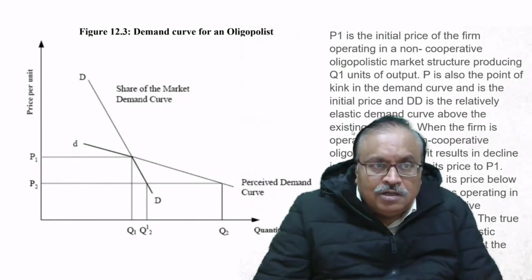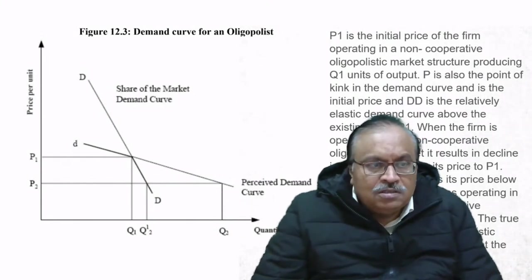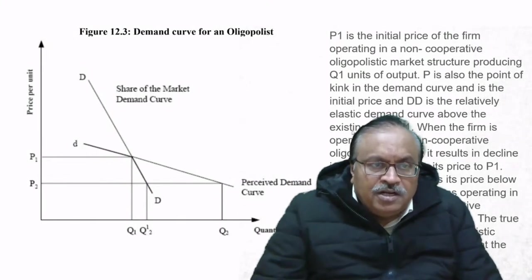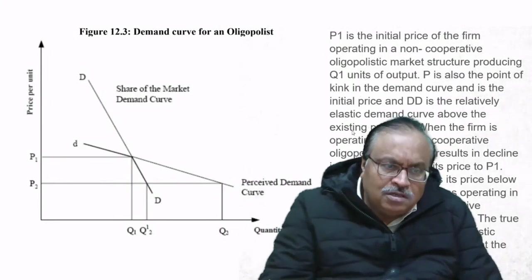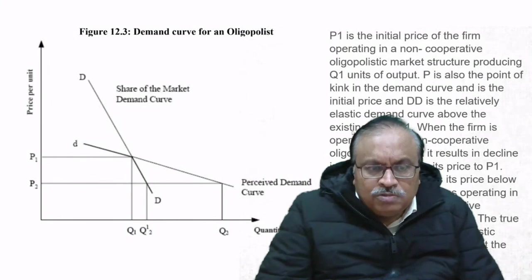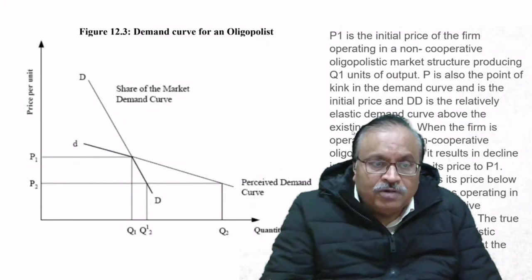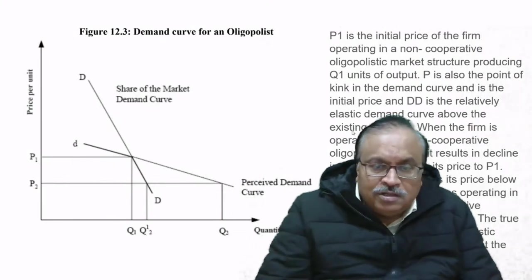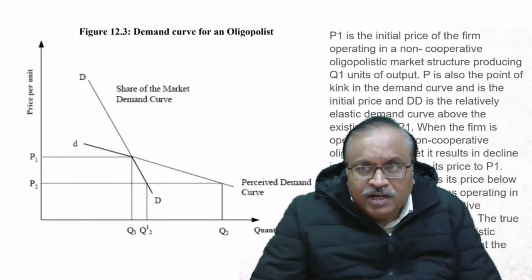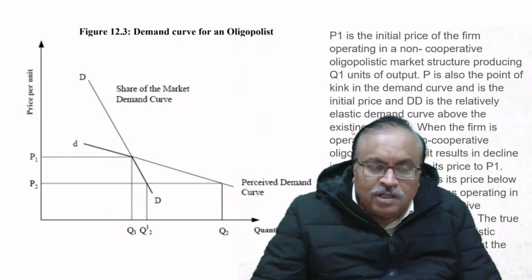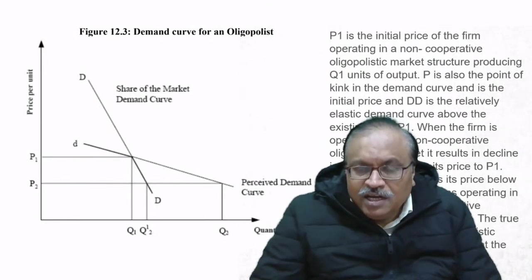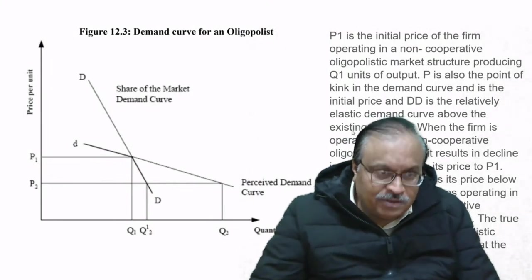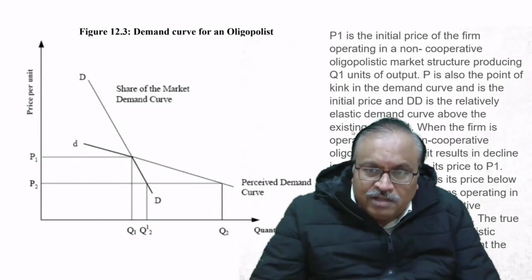Looking at the graph: capital DD is the market demand and small dd is the perceived demand curve. At price level P2 the demand quantity is Q2, and at price P1 the demand is Q1. P1 is the initial price of the firm operating in a non-cooperative oligopolistic market, producing Q1 units. P1 is also the kink point in the demand curve. DD is the relatively elastic demand curve above the existing price P1.